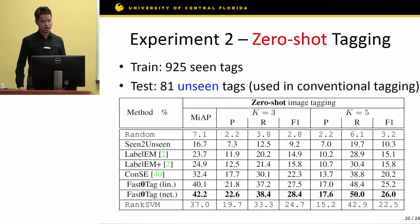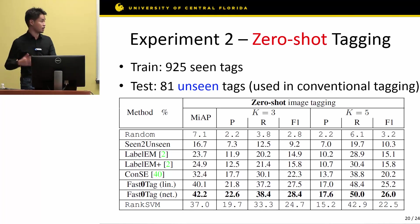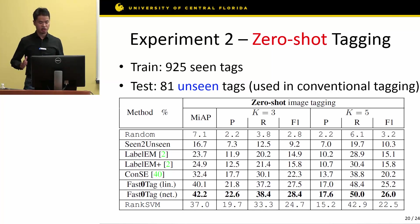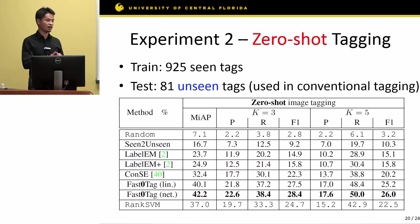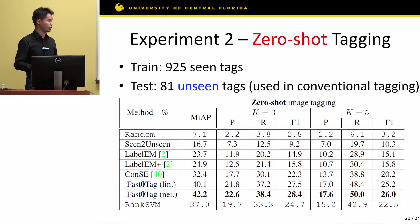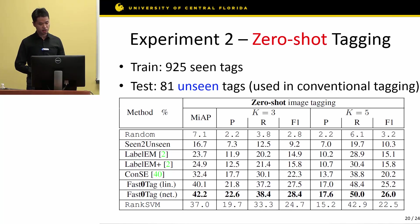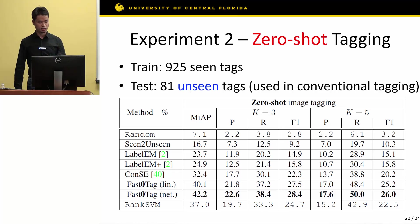The second task is zero-shot tagging. We train our model on 925 tags and test it on the disjoint 81 tags that never appeared during training. The baselines here are zero-shot classification methods — although zero-shot classification cannot directly be used for tagging, classification confidence can still be used for ranking. We can see that our nonlinear approach of Fast Zero-Shot Tagging outperforms all other baselines in the zero-shot tagging evaluation.